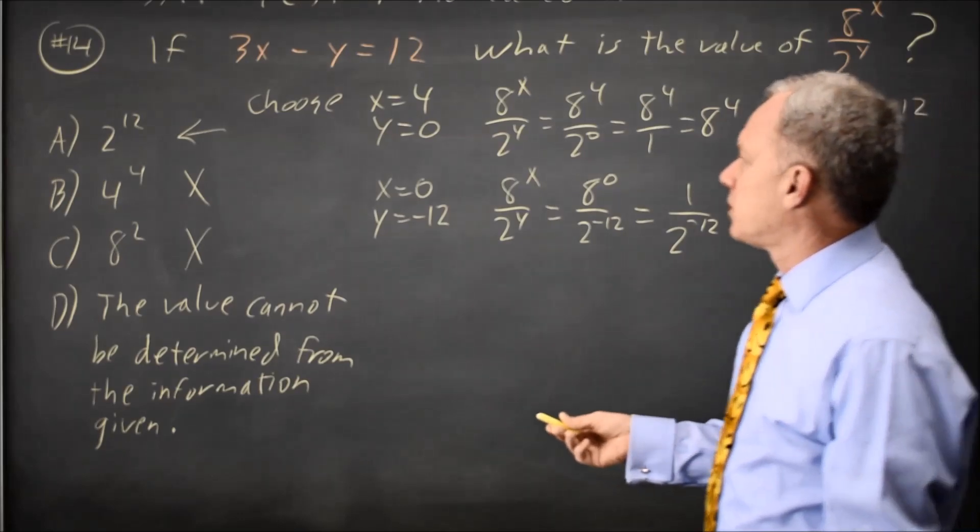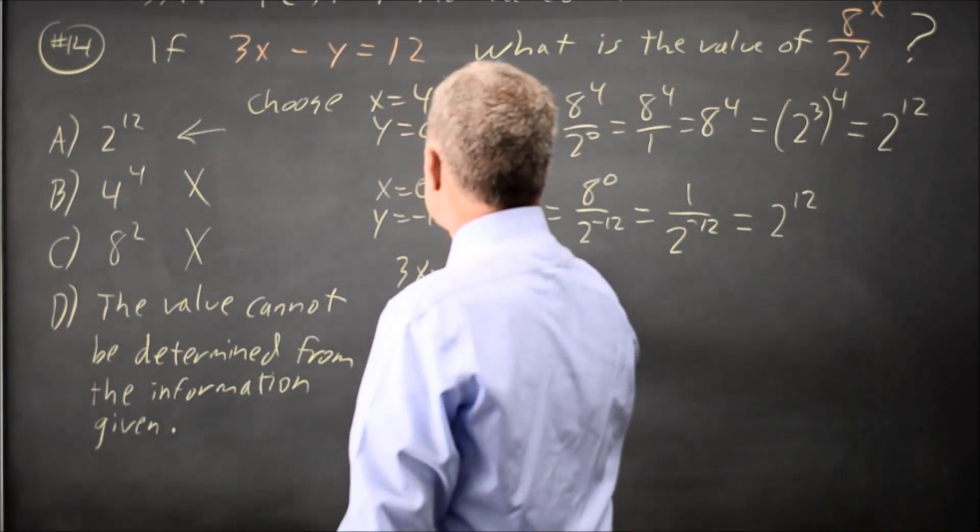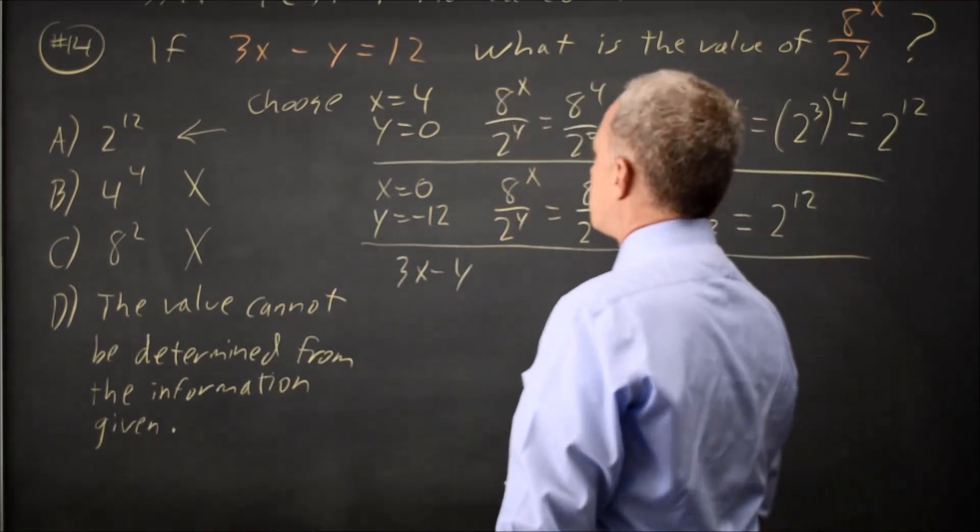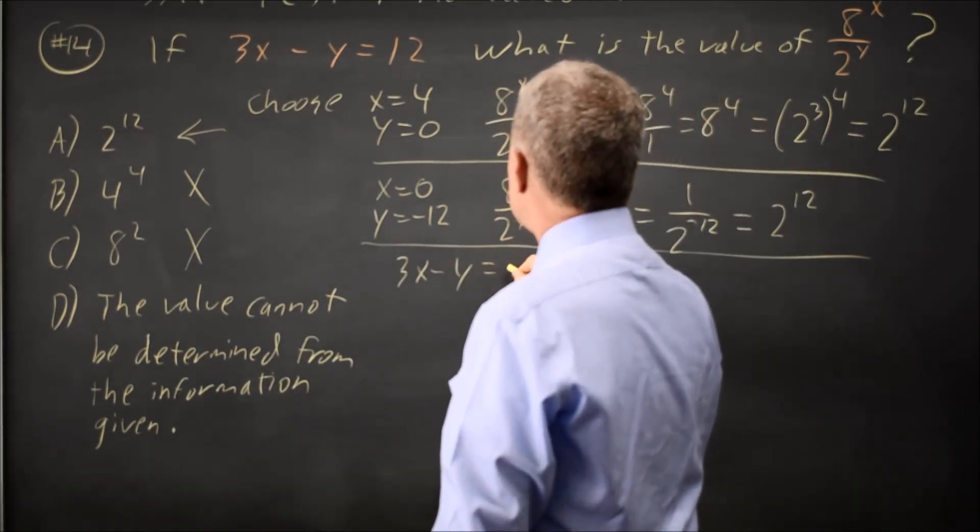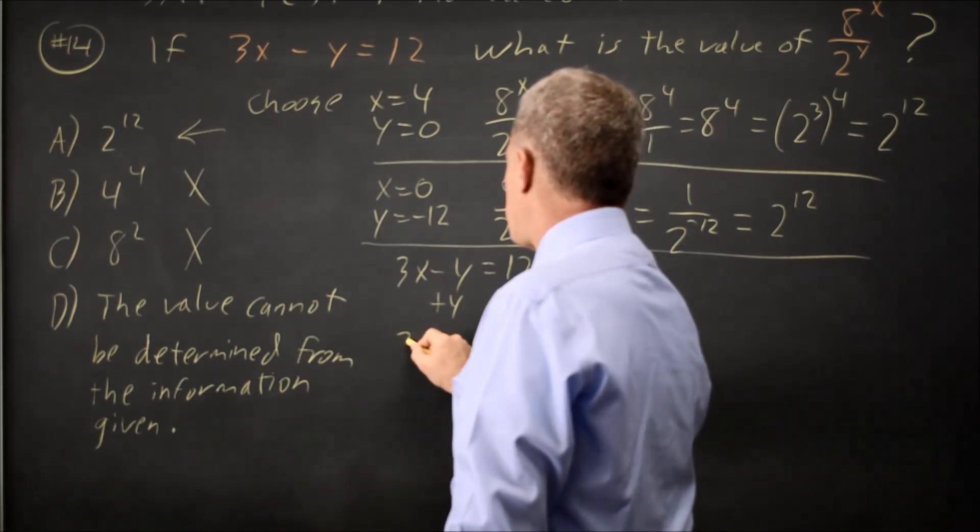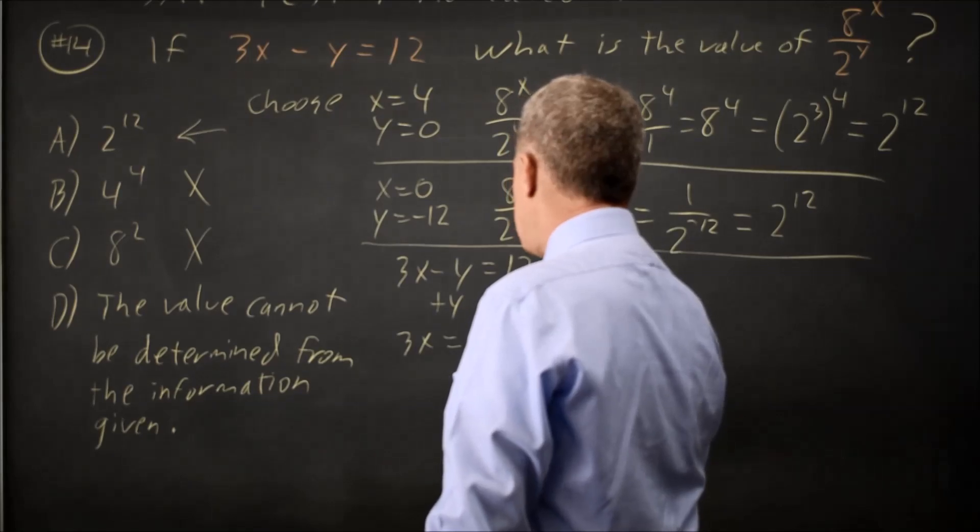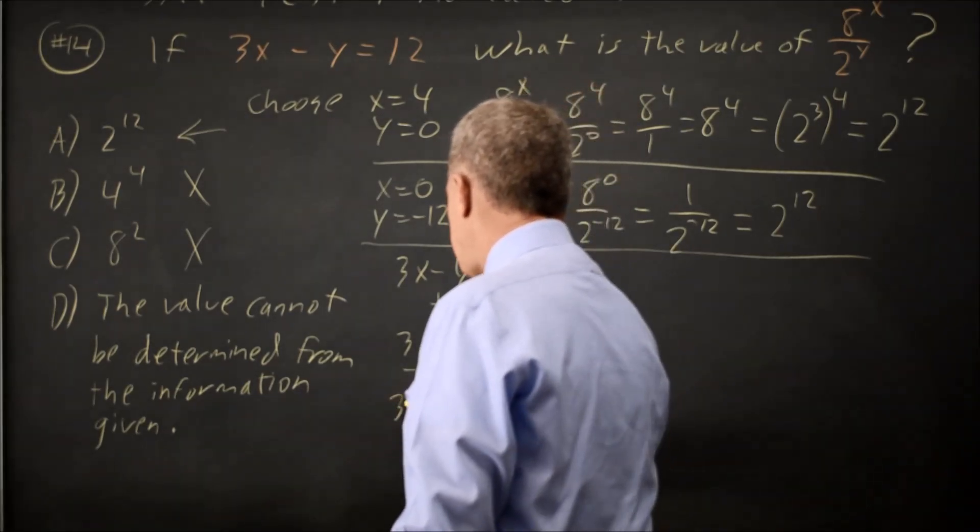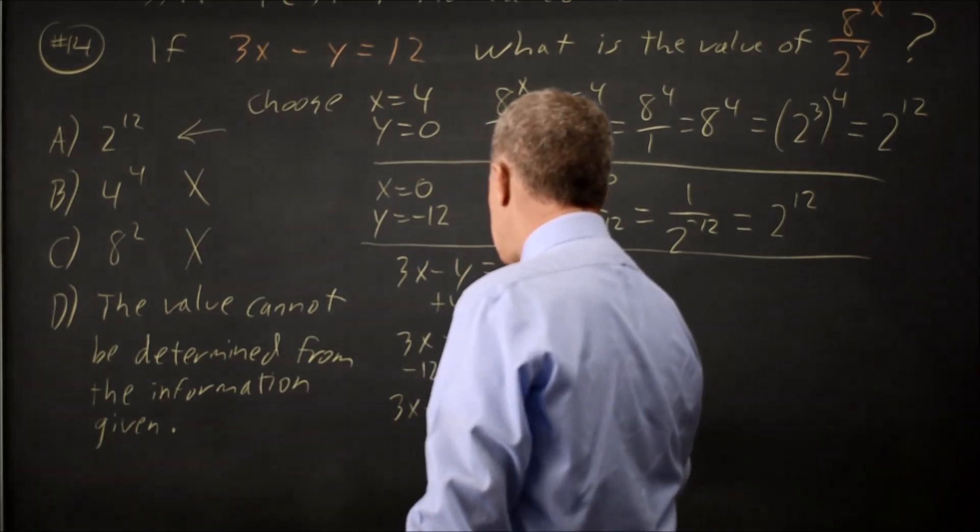Let's try it algebraically, though. 3x minus y equals 12. Add y to both sides. 3x equals 12 plus y. Subtract 12 from both sides. I'm just solving for y. 3x minus 12 equals y.